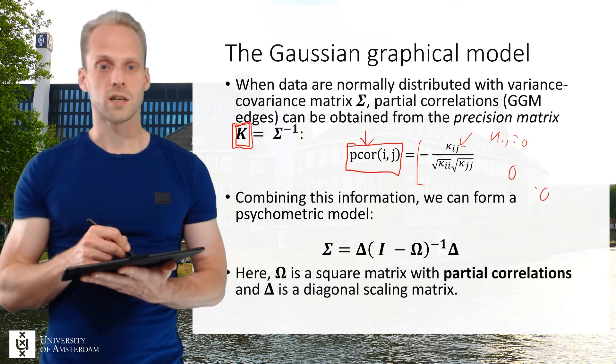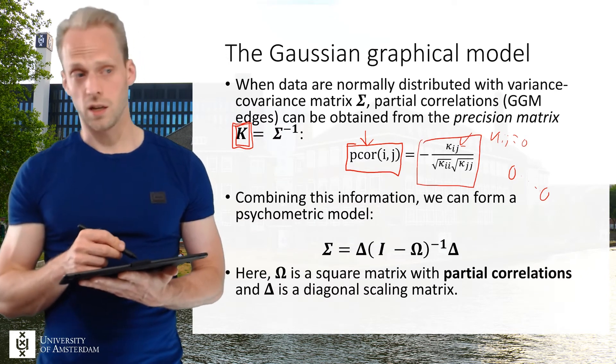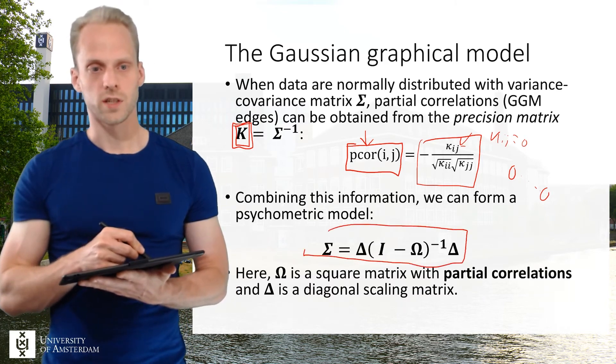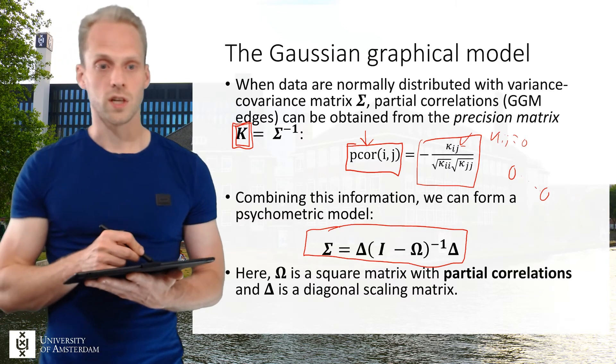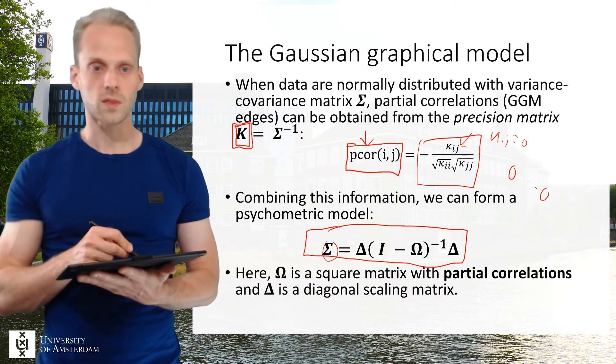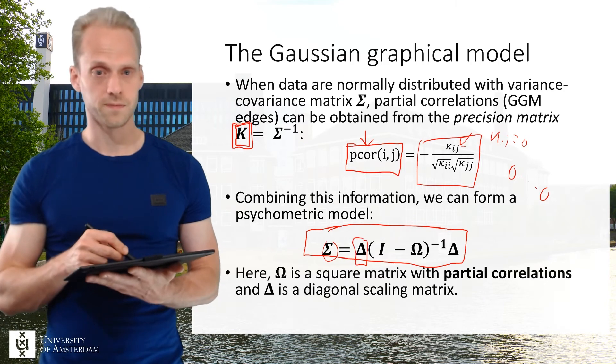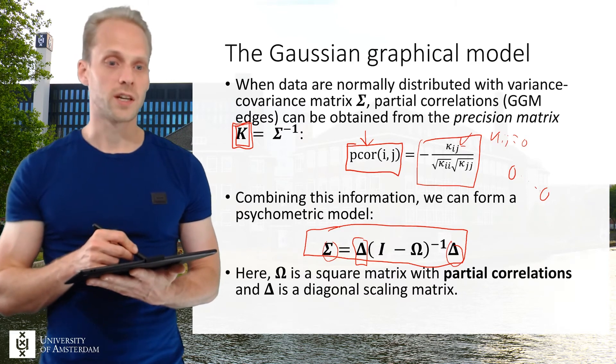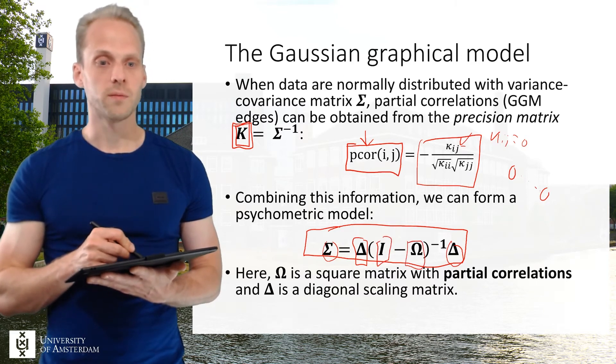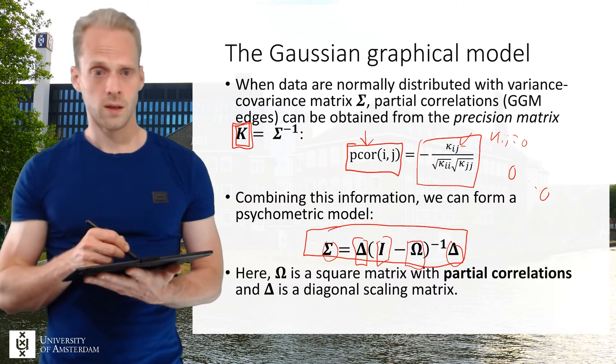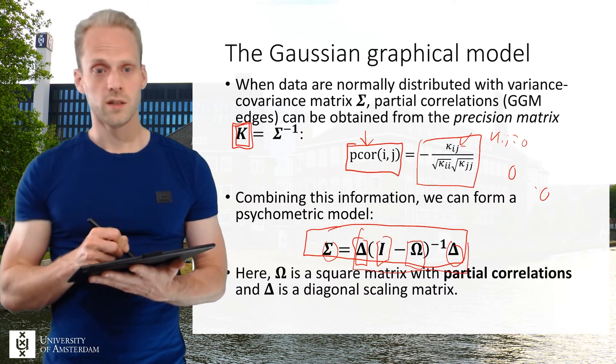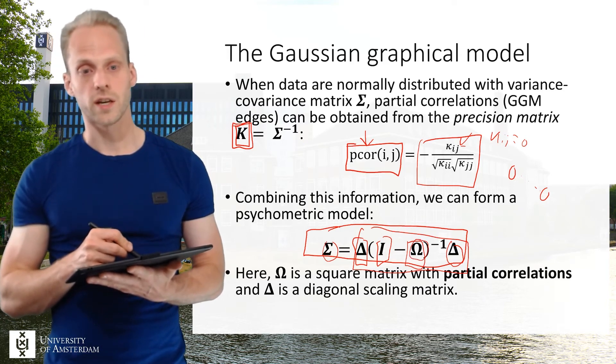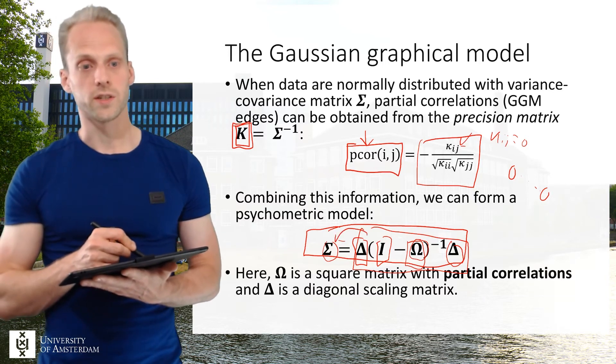Now if we rewrite this expression in a matrix way we can form this particular model for sigma which gives us a psychometric model that we can estimate. So here we say that the variance covariance matrix equals a diagonal scaling matrix multiplied on both sides by an identity matrix minus this omega matrix, and that's a partial correlation matrix. And this model here allows me to translate from a network of partial correlations, this is zeros on diagonal and partial correlations elsewhere, to an implied variance covariance matrix.